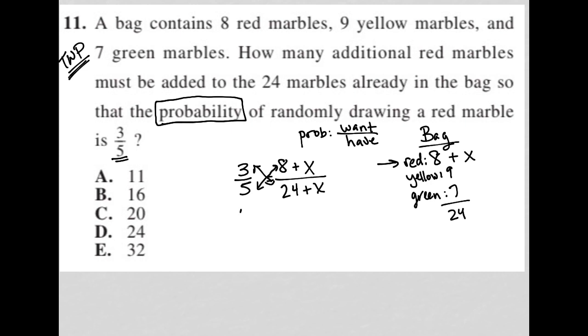So I can solve this proportion by cross-multiplication. And I can distribute the five across here, give me 40 plus 5X equals 72 plus 3X.